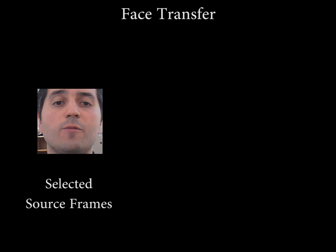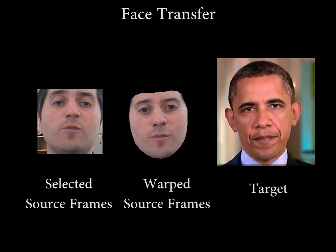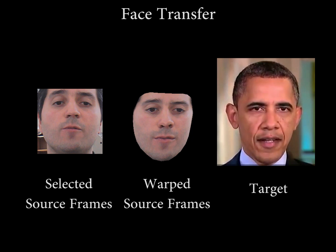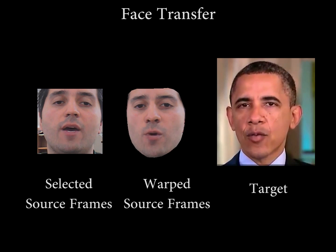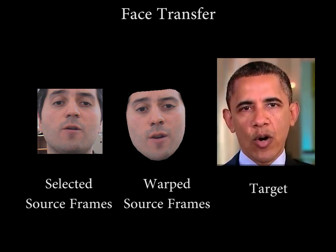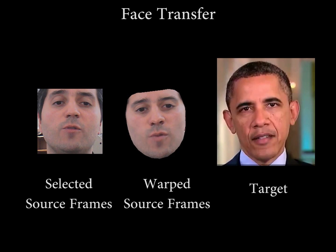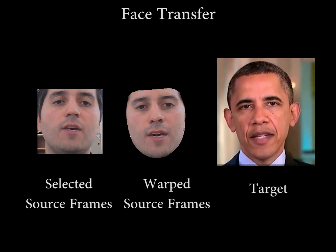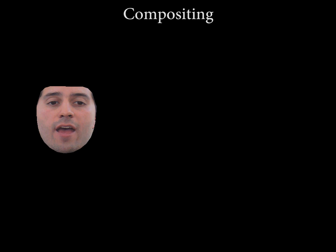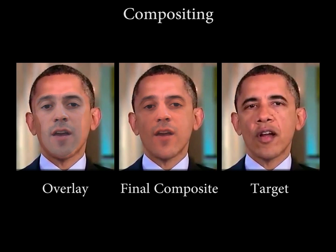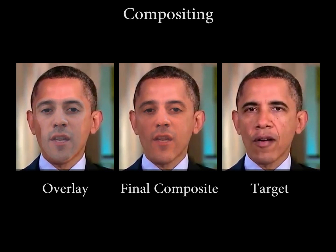Once we have a matching source frame for each target cluster, we transfer the source face to the target sequence and generate a smooth transition between the frames. In a final step, we compute a seam between the source and target face and use Poisson Blending to produce a convincing composite.